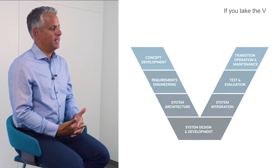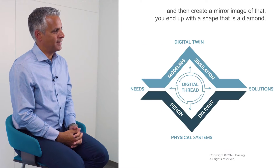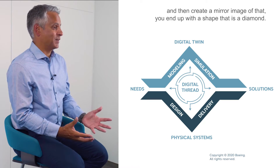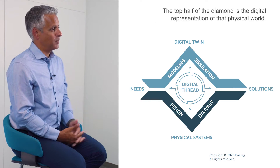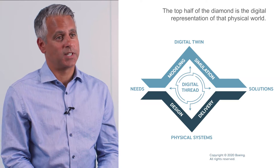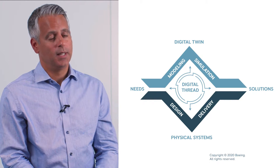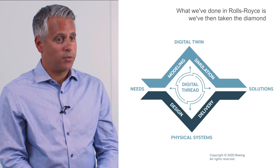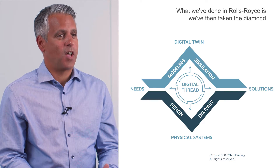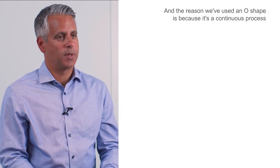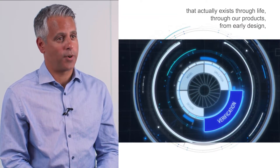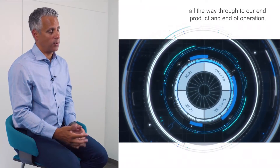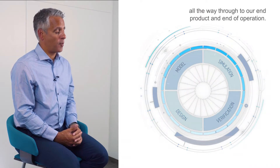If you take the V and create a mirror image of it, you end up with a diamond shape. The bottom half is the V — the physical world — and the top half of the diamond is the digital representation of that physical world. What we've done at Rolls-Royce is taken the diamond and made it an O shape, because it's a continuous process that exists through the life of our products, from early design all the way through to end of operation.